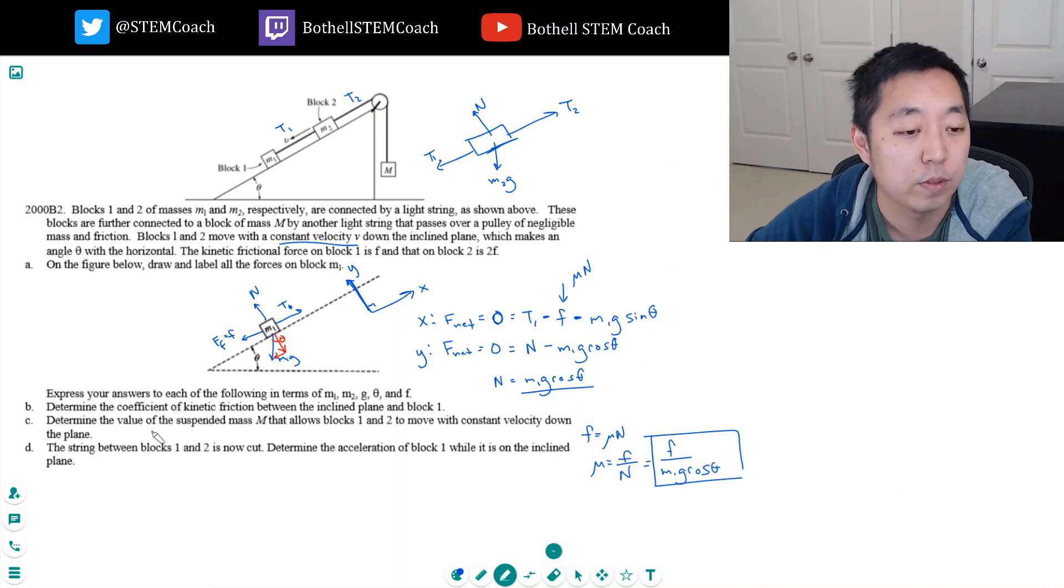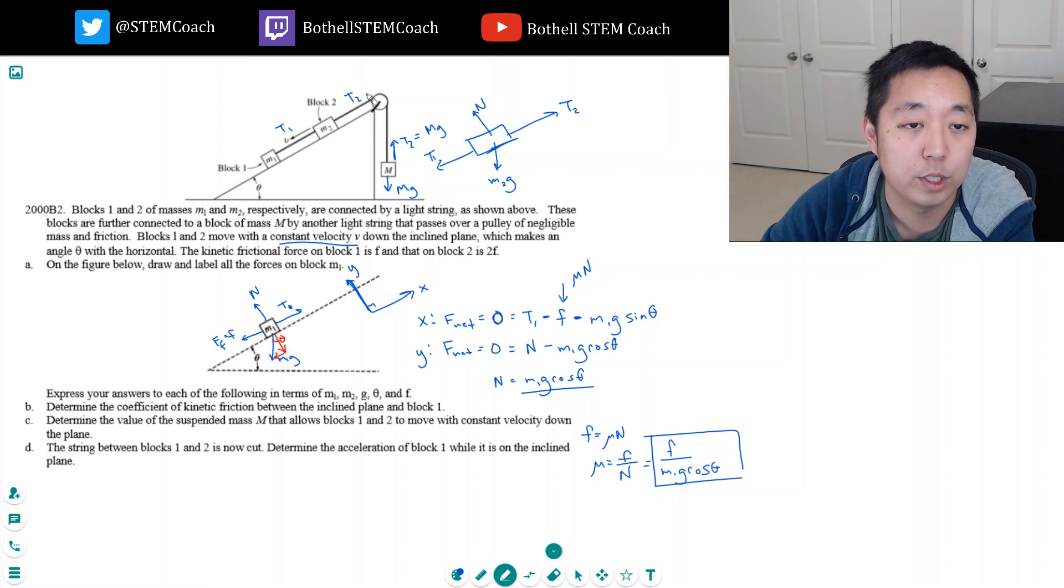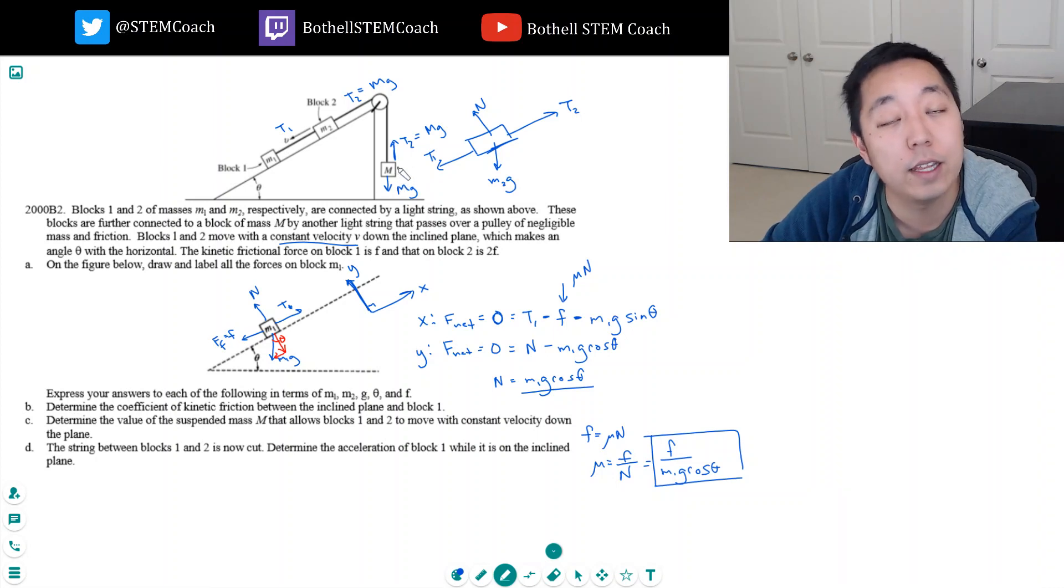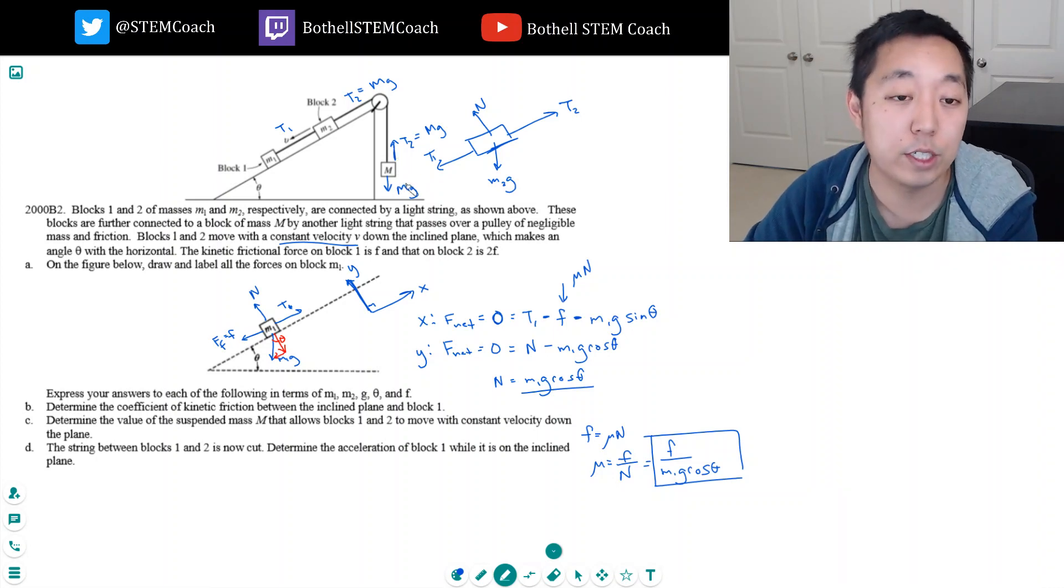So this is kind of a bizarre question, bizarre kind of setup. So I was a little confused. Determine the value of the suspended mass M that allows block one and two to move with constant velocity. Okay, so let's do some free body diagrams. This is MG and this is T2, right? Those are the only two forces on here. Now these have to be equal. So T2 has to equal capital MG. Why? Because this thing is moving at constant velocity. So again, the acceleration is zero and hence the net force must be zero because F equals MA.